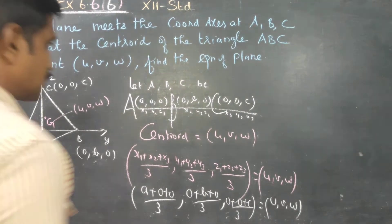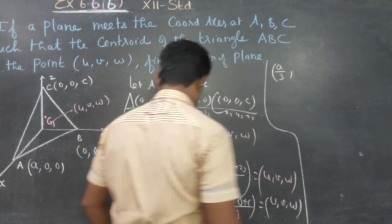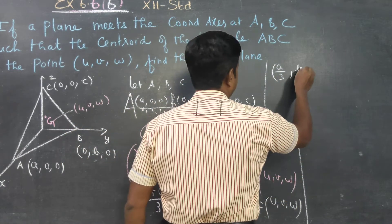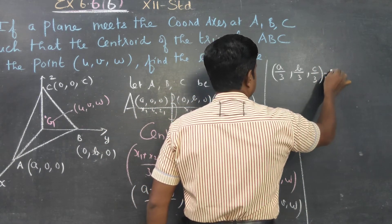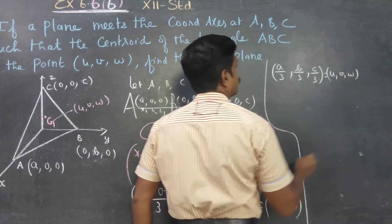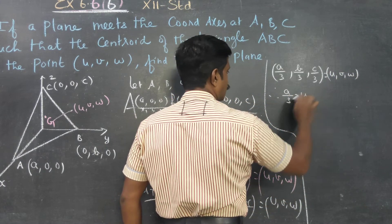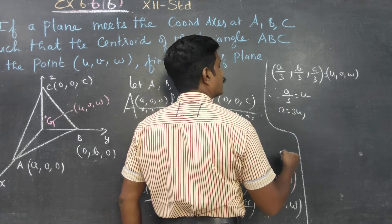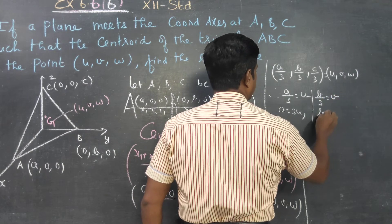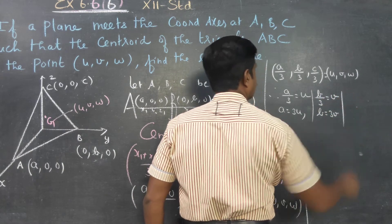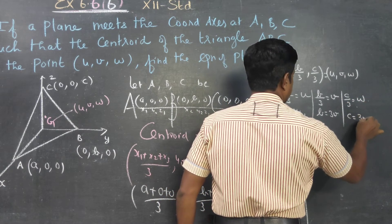Therefore a/3 equals u, so a equals 3u. B/3 equals v, so b equals 3v. C/3 equals w, so c equals 3w.